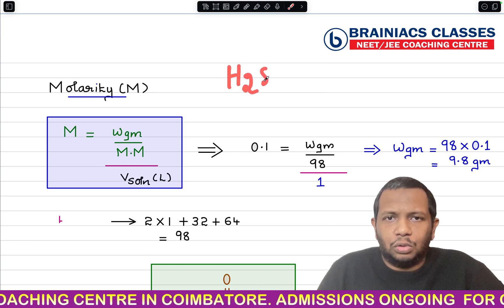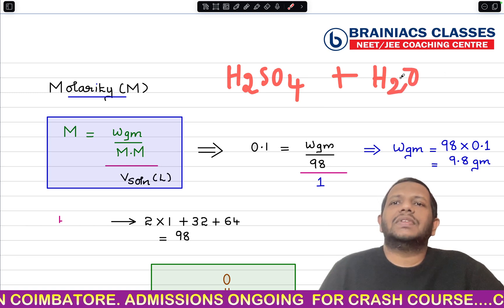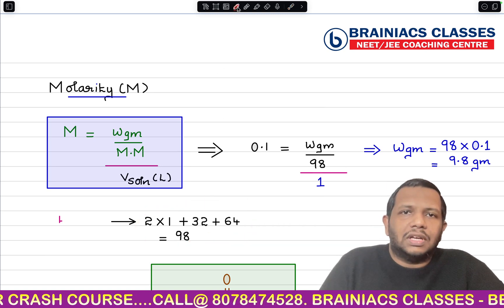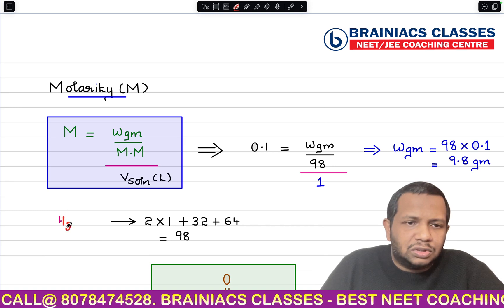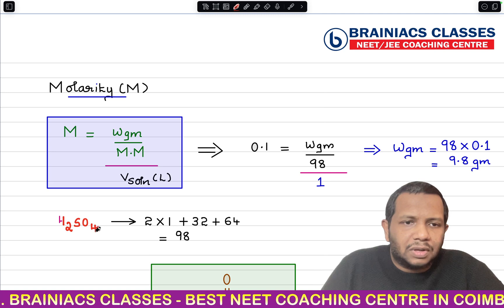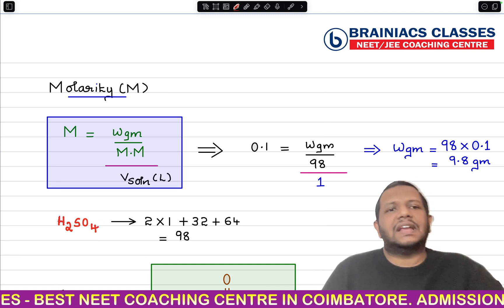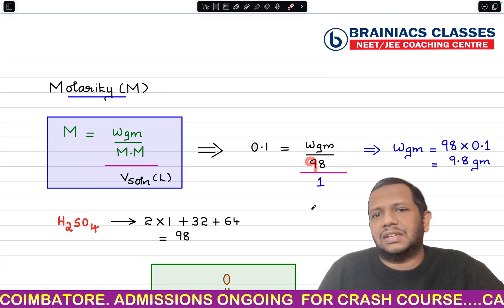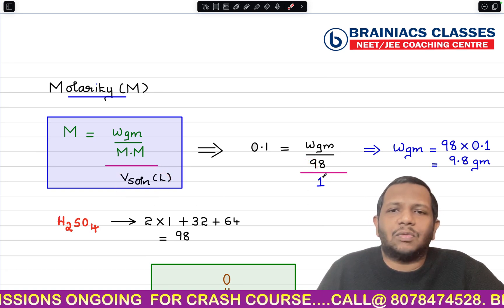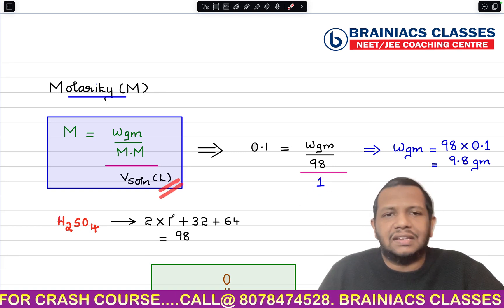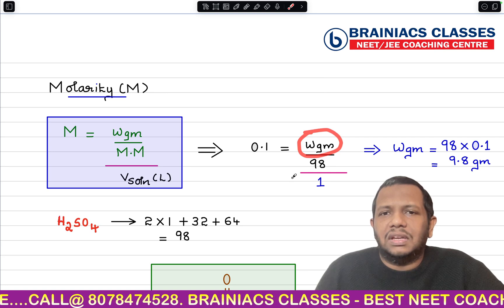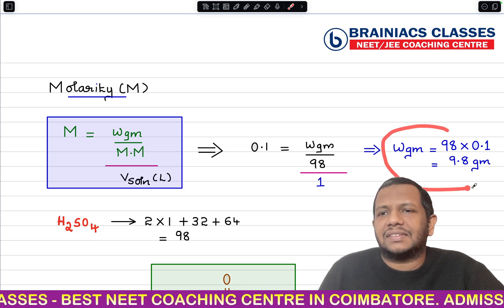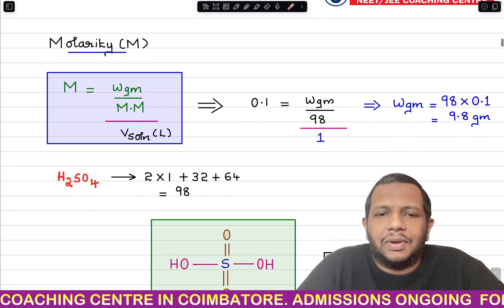The molar mass of H₂SO₄ is 98 g/mol. The volume of the solution is 1 liter as given. Substituting into the molarity formula: 0.1 = weight in grams / 98 × (1/1). Cross-multiplying gives weight in grams = 98 × 0.1 = 9.8 grams. So the answer is 9.8 grams.